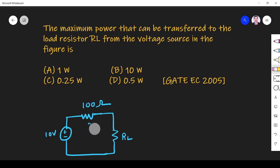So we will see the problem. The options are: option A, 1 watt; option B, 10 watts; option C, 0.25 watts; and option D, 0.5 watts.